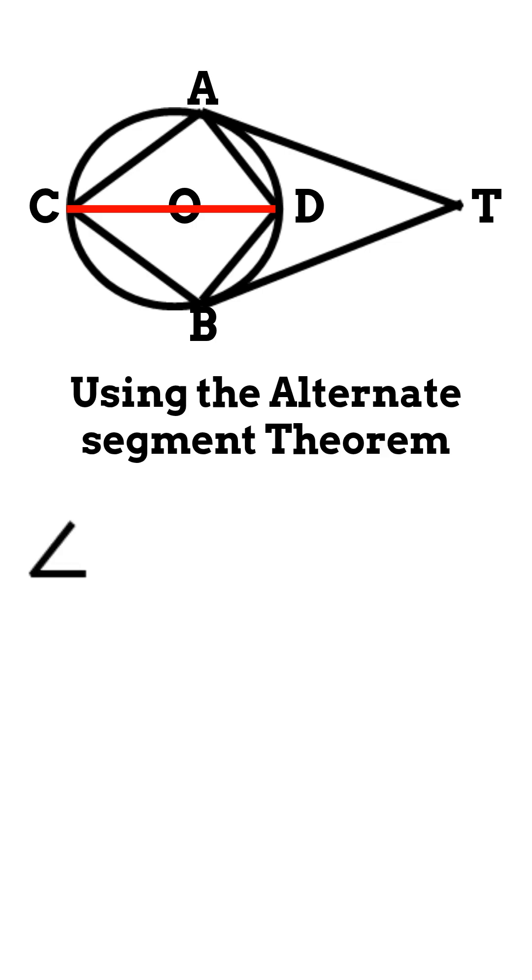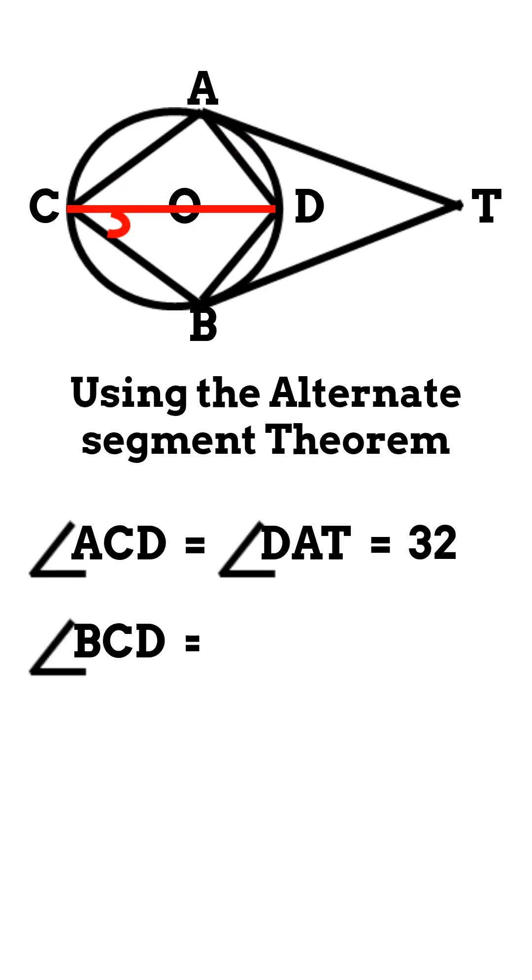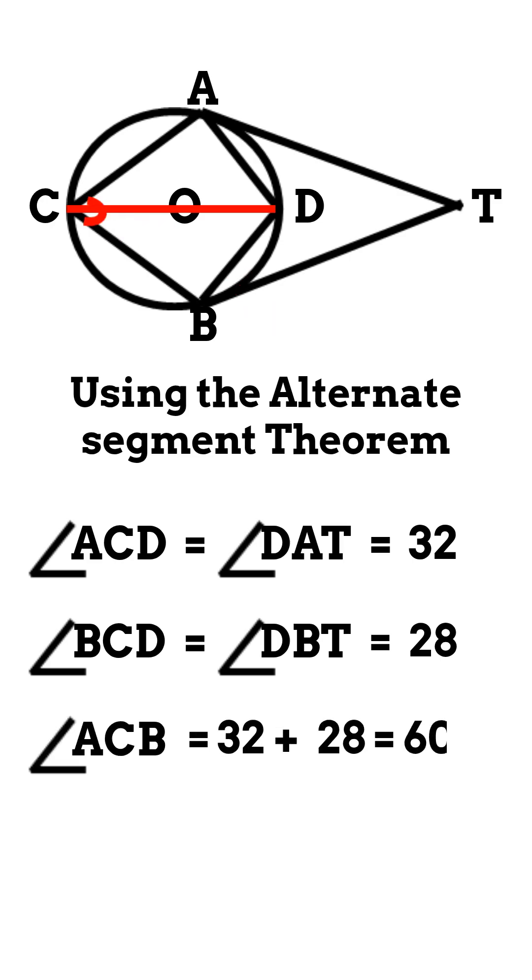We can say that angle ACD equals angle DAT equals 32 degrees. Similarly, angle BCD equals angle DBT equals 28 degrees. Hence, angle ACB equals 32 degrees plus 28 degrees equals 60 degrees.